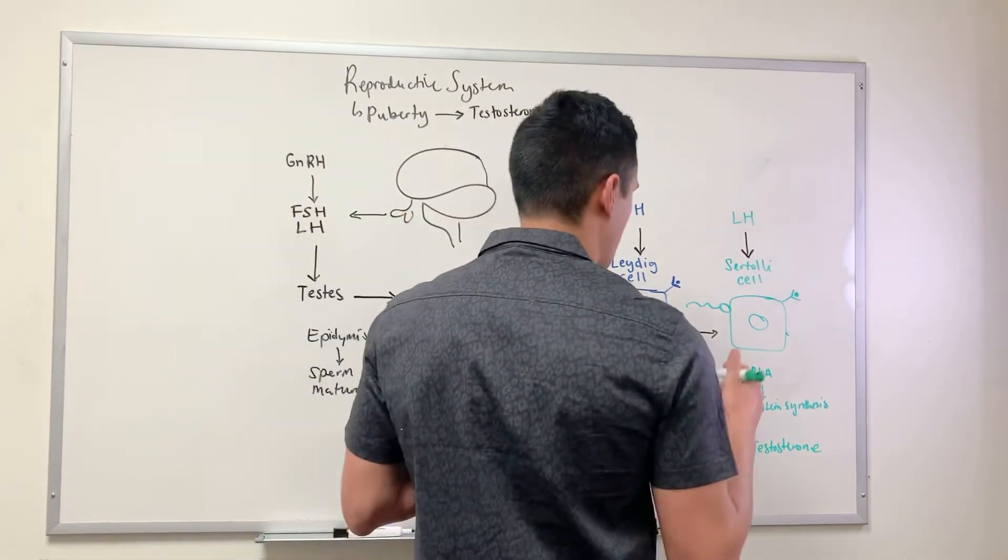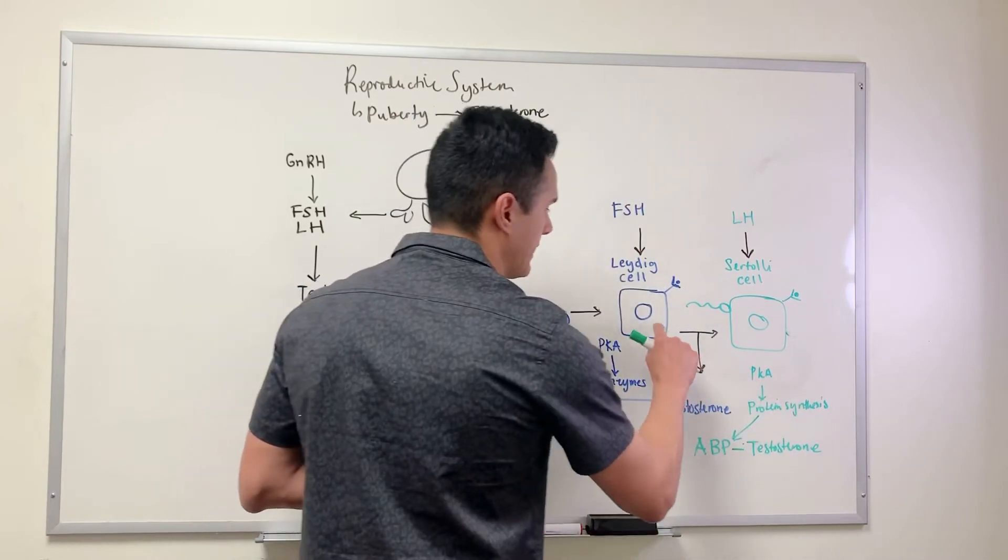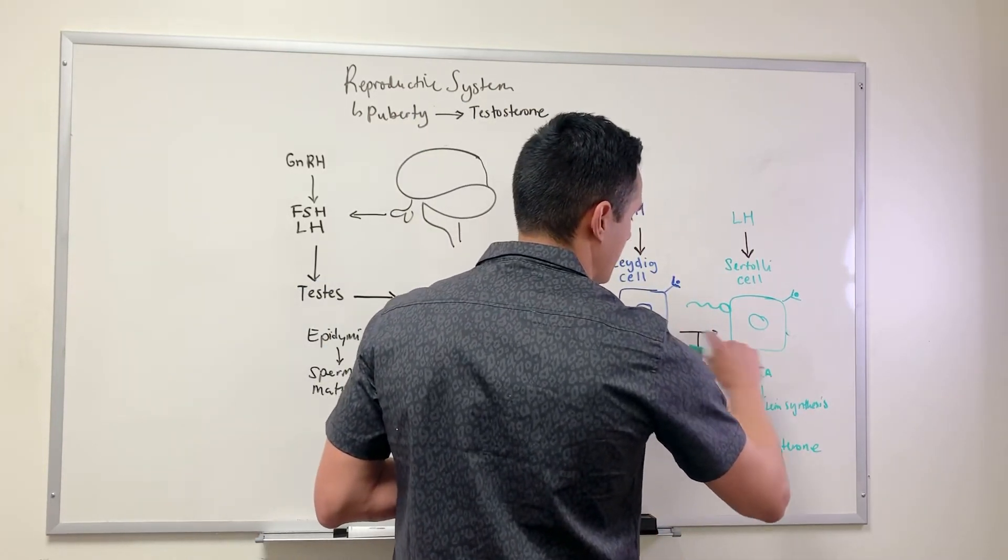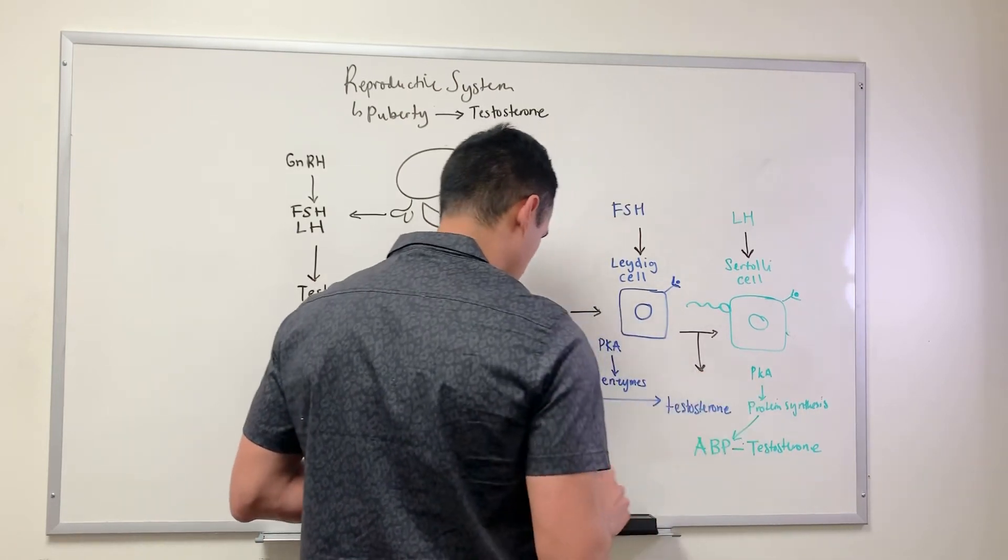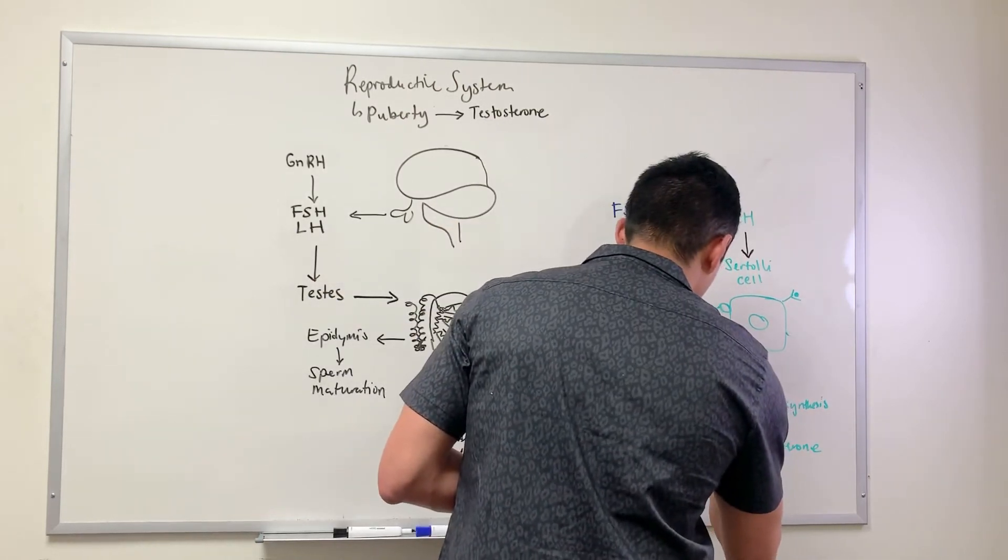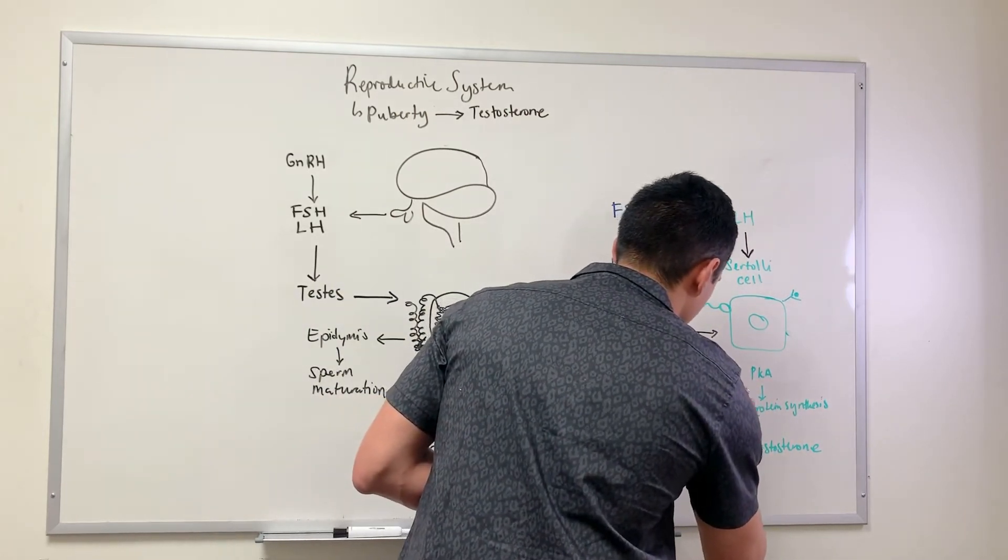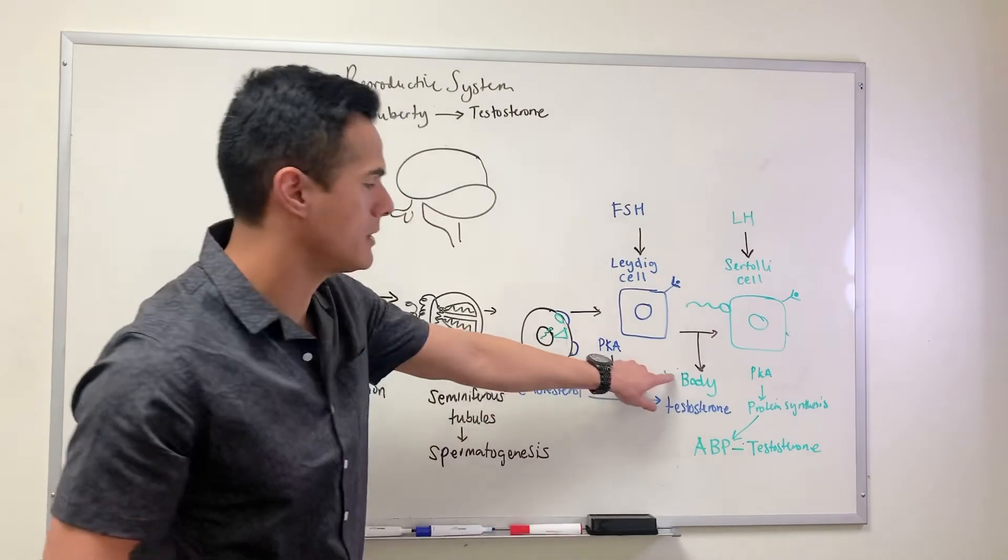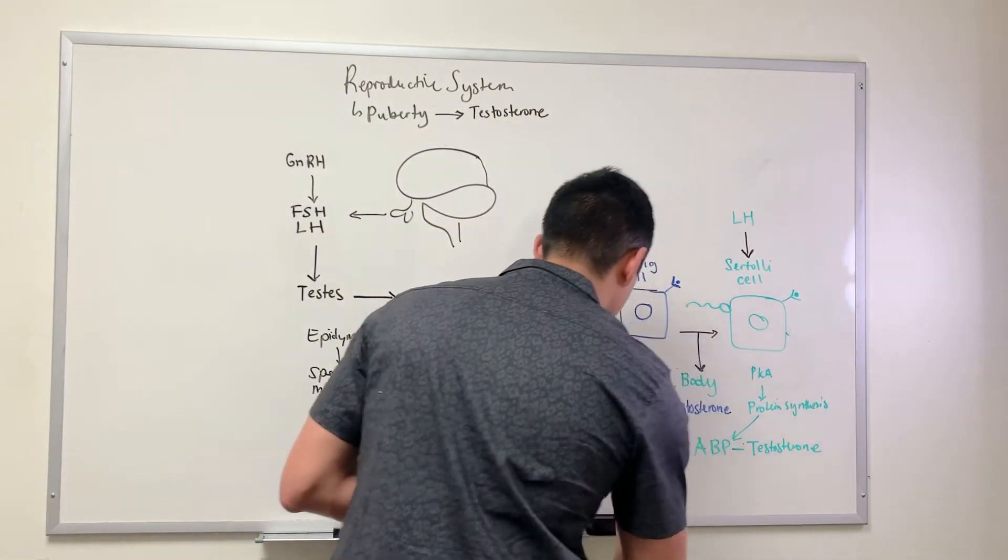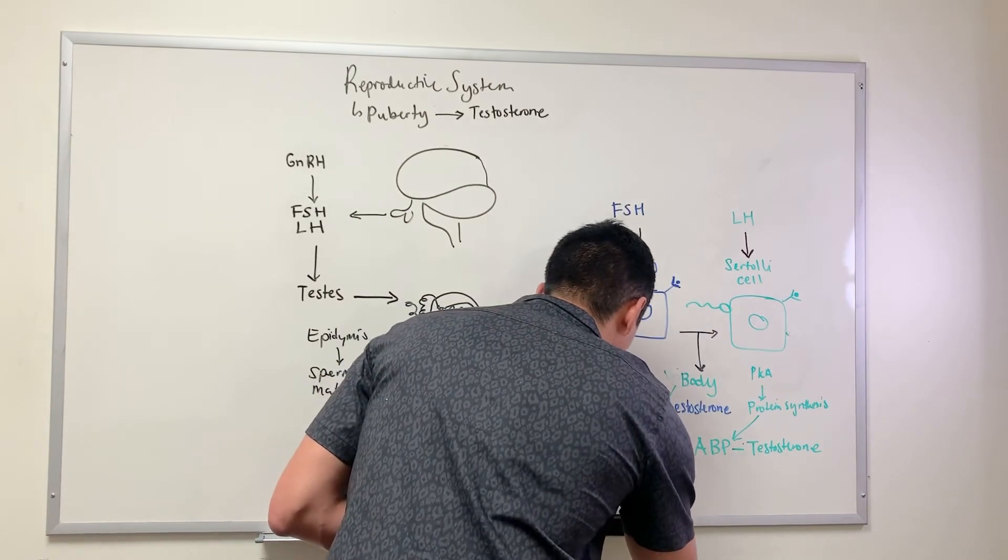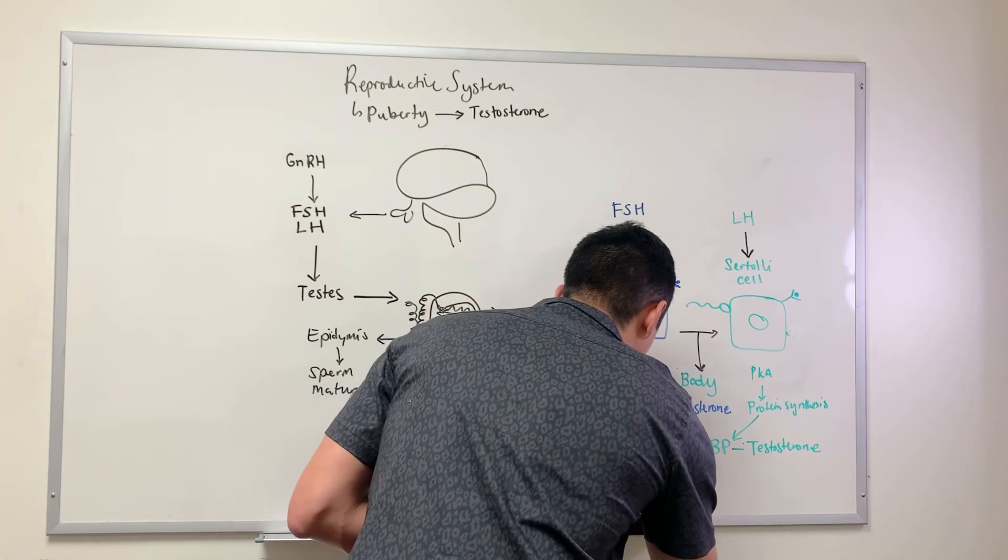The testosterone will diffuse here and get into the Sertoli cell. This testosterone can also travel here - it travels to the rest of the body where we'll develop the masculine features for males.